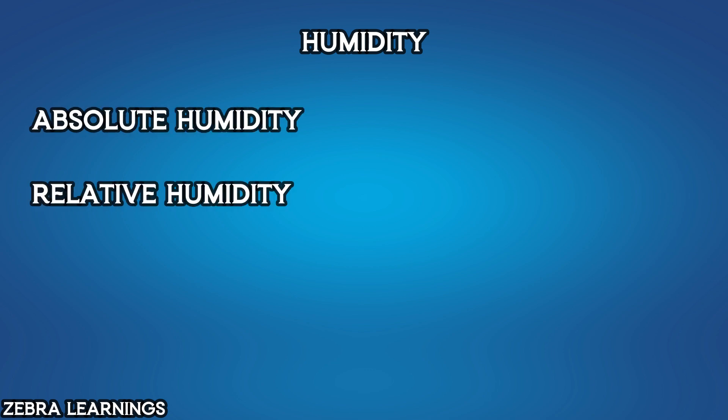There are two types of humidity: absolute humidity and relative humidity. Absolute humidity is measured in grams per cubic meter. Relative humidity is measured as a percentage. However, what we commonly use is relative humidity.